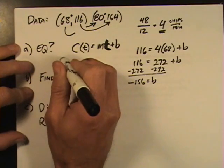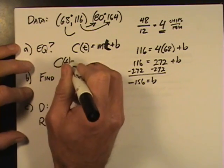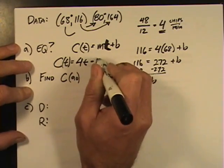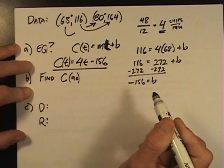So, now my equation then will be the chirps based on the temperature is equal to 4t minus 156. That's the equation.